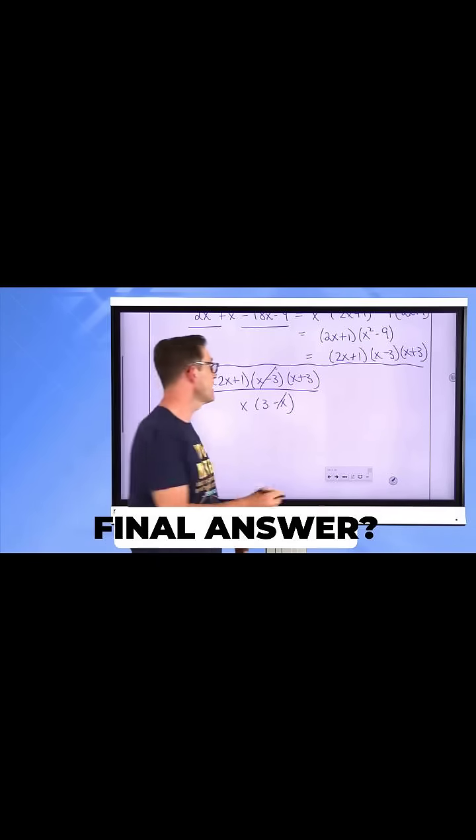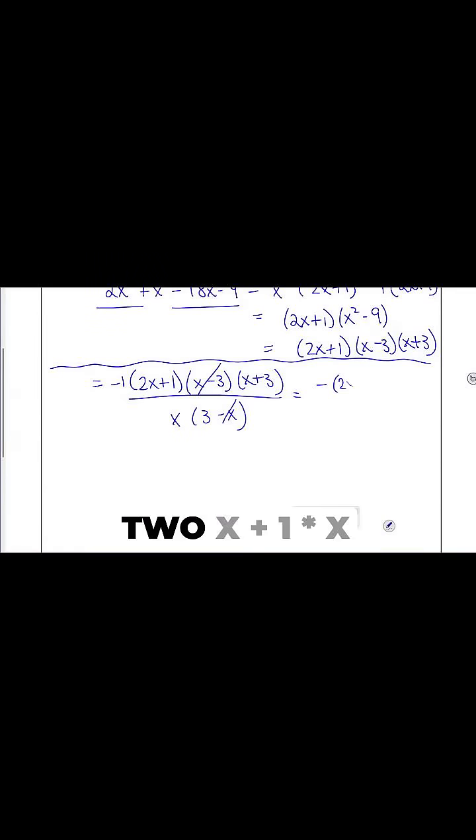So what's my final answer? My final answer is negative two x plus one times x plus three, all divided by x. And that's it.